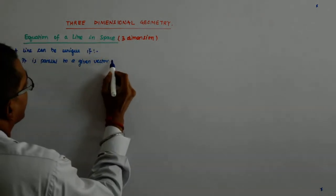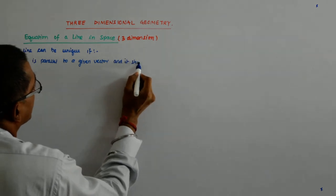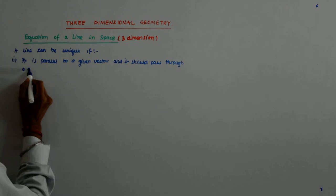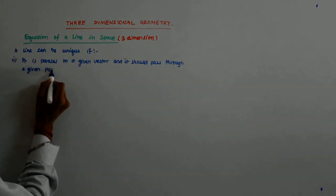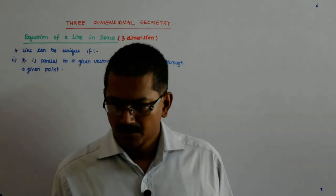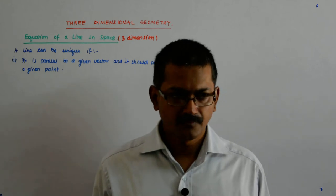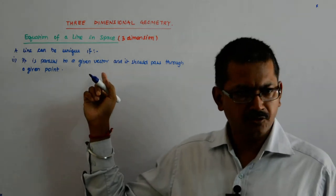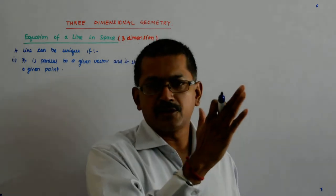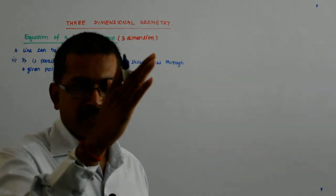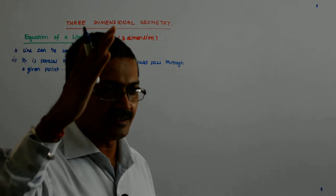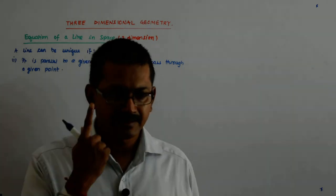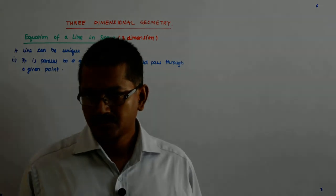Another condition should be added: it must be parallel to a given vector and it should pass through a given point. You keep taking the parallel ones, and yes, the one line which passes through that point becomes the unique line — that is only one line. Out of all those infinite lines, there will be only one line satisfying that combined condition.